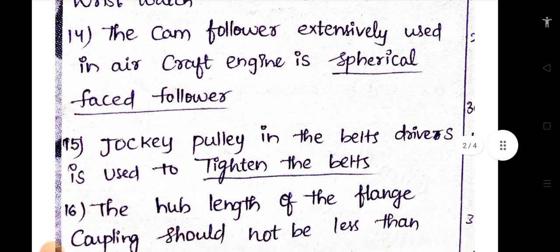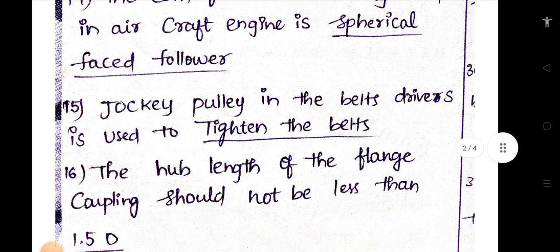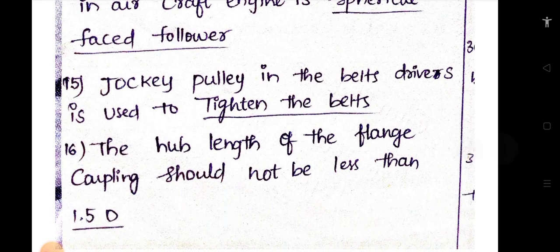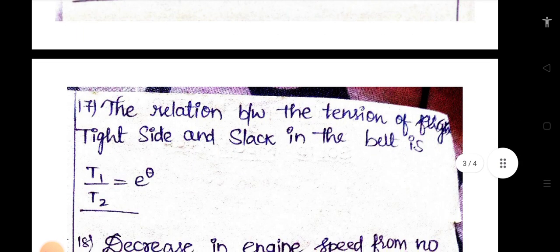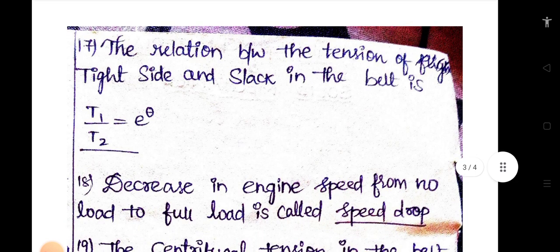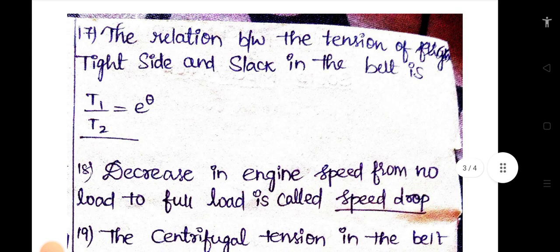Jockey pulley in the belt drivers is used to tighten the belts. You mostly choose jockey pulleys anyway. The hub length of the flange coupling should not be less than 1.5D. The relation between the tension of tight side and slack in the belt is T1 by T2 is equal to E to the power mu theta.